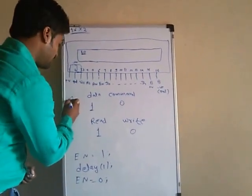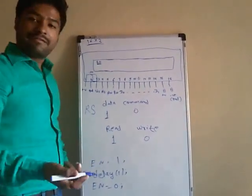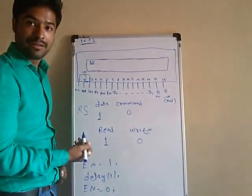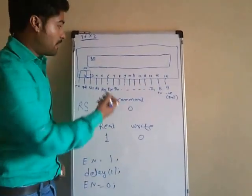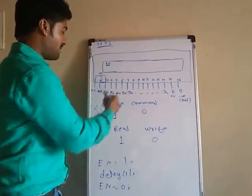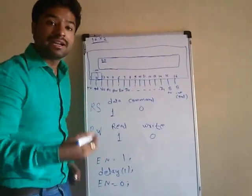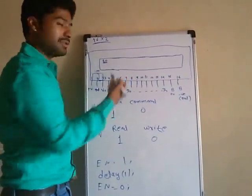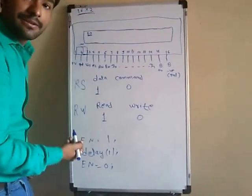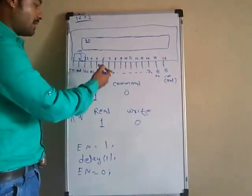The next important pin is the Register Select (RS) pin. It generally selects between two registers: the data register and the command register. If we want to give a command to the LCD, we set this pin to 0. If we want to give data to the LCD, we set the RS pin to 1. Another important pin is the fifth pin — the Read/Write (RW) pin — used to read or write data on the LCD. To read data, set it to 1; to write data, set it to 0.